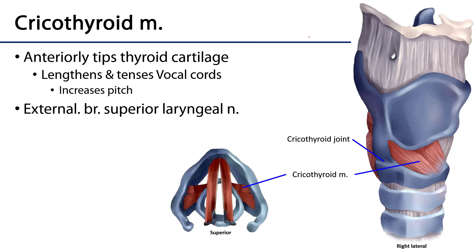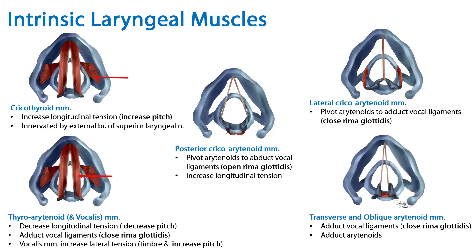Finally, we have the cricothyroid muscle, which runs between the thyroid cartilage and the cricoid cartilage. When it contracts, it tips the thyroid cartilage forward, putting tension on the vocal ligaments and thus increasing pitch. The cricothyroid muscle is unique among intrinsic laryngeal muscles in that it is not innervated by the recurrent laryngeal nerve; it is innervated by the external branch of the superior laryngeal nerve. That concludes our discussion of the intrinsic laryngeal muscles and their functions in terms of the rima glottidis and tension on the vocal ligaments.